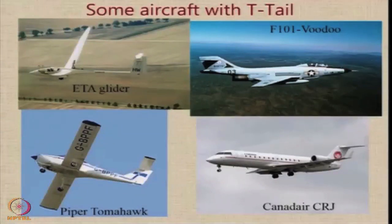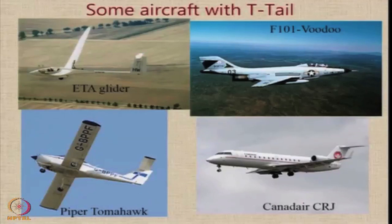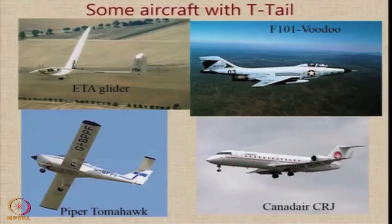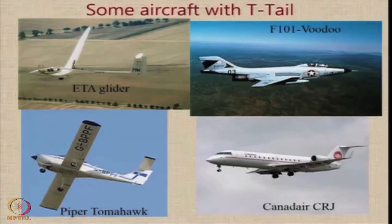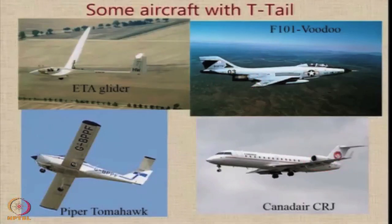Here are some popular aircraft with a T-tail configuration. It is very popular among gliders — one of the most efficient gliders today is the ETA glider, and you can see how much the wing is flexing in flight; that configuration has a T-tail. The Piper Tomahawk is another famous aircraft with a T-tail, as are the military F-101 Voodoo and the Canadair RJ. In most cases, this requirement is driven by the need to mount engines on the rear of the fuselage.